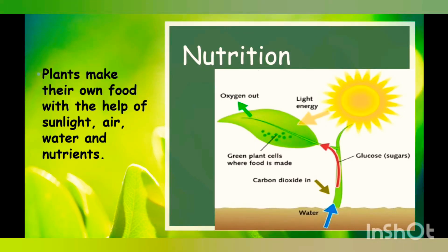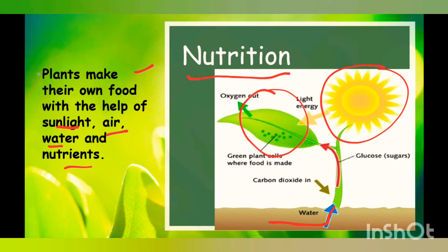The first life process is nutrition. We have talked about nutrition in all living things earlier, so let's recap. Plants make their own food with the help of sunlight, air, water and nutrients. Plants get water from the soil, they get light from the sun, and their leaves make food for the whole plant. They take in carbon dioxide and release oxygen. That is the food-making process in a plant. It is actually the leaf that is cooking food for the plant — we cannot see it, but it's going on.